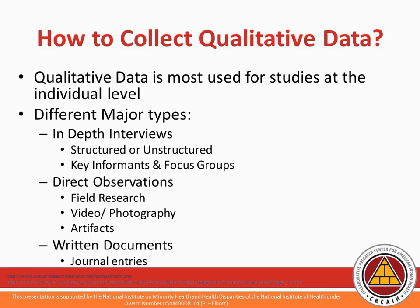One could also utilize direct observations to gather data consisting of detailed descriptions of people's activities, behaviors, actions, and the full range of interpersonal interactions that are part of an observable human experience. Examples being field research, videos and photography, as well as looking at artifacts. The final way to collect qualitative data is to look at written documentation such as studying excerpts, open-ended written responses to questionnaires and surveys, quotations, and journal entries. The data for qualitative analysis typically comes from field work where the researcher makes first-hand observations of activities and interactions. However, for our research purposes, more often than not we find that we retrieve more qualitative data through interviews and written documents.